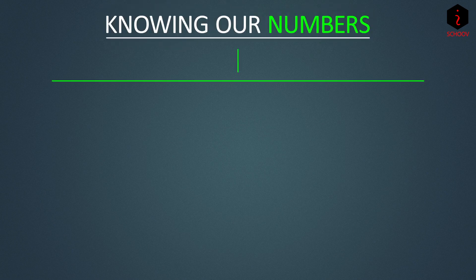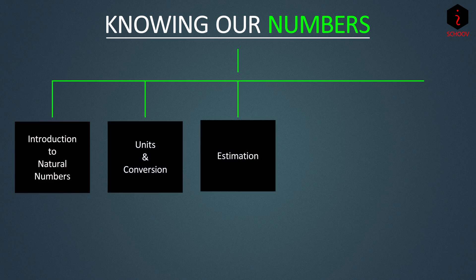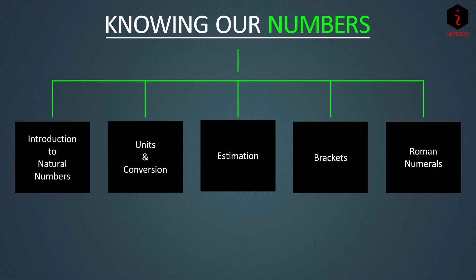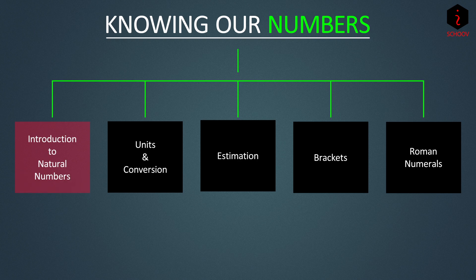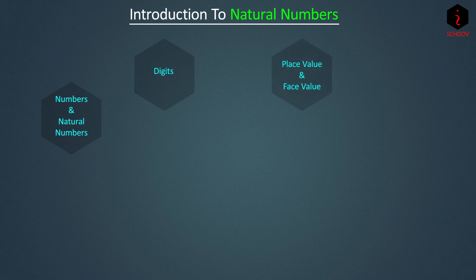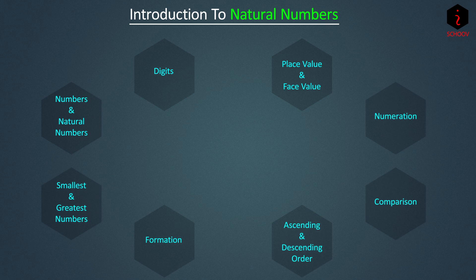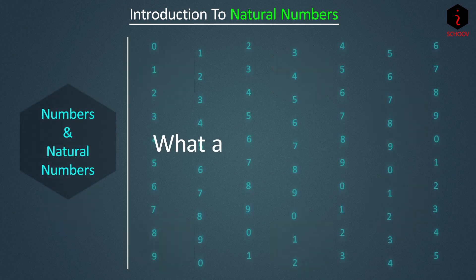In the chapter 'Knowing Our Numbers' we will study five topics: introduction to natural numbers, units and their conversion, estimation, brackets, and Roman numerals. In this video we will talk about the first topic — introduction to natural numbers. The subtopics are: numbers and natural numbers, digits of a number, place value and face value of a digit, numeration, comparison of numbers, ascending and descending order, and formation of numbers.